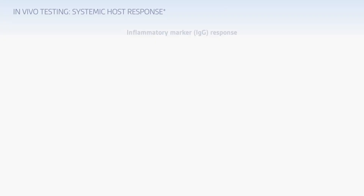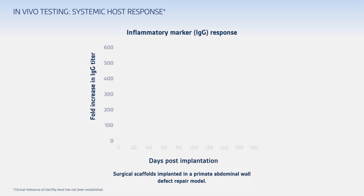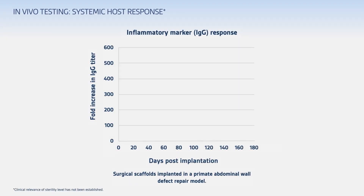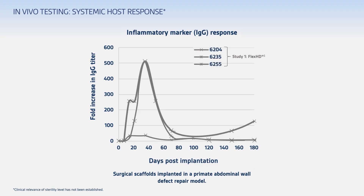Here are the results of the systemic antibody blood tests we just talked about. In two separate studies that followed the same protocol, we implanted Flex HD and Alloderm into animal models. Then we collected blood samples from each subject at several time points.